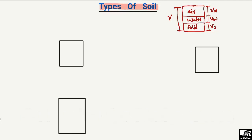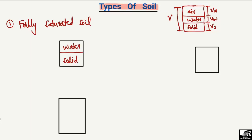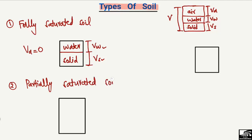Based on this phase diagram, we can define different types of soil according to saturation level. The first type is fully saturated soil. In fully saturated soil, we have only water and solid components — there is no air present. The volume of air is equal to zero in this case.